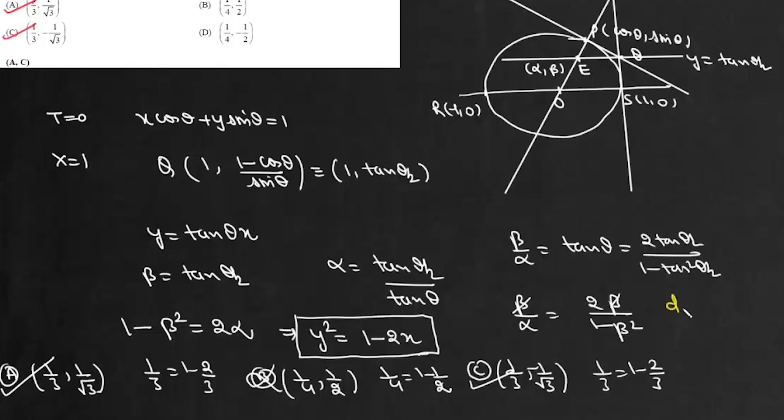And then this option D where we have (1/4, -1/2). So it will be this 1/4, 1 - 1/2. This is incorrect. So the correct options are A and C.